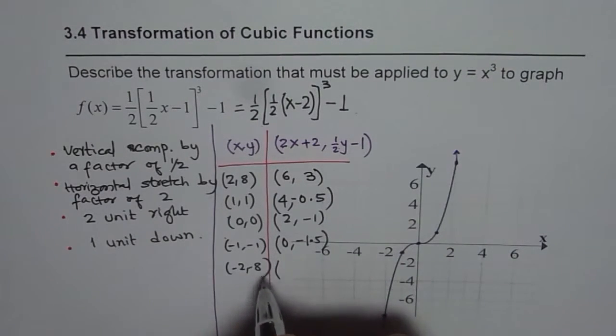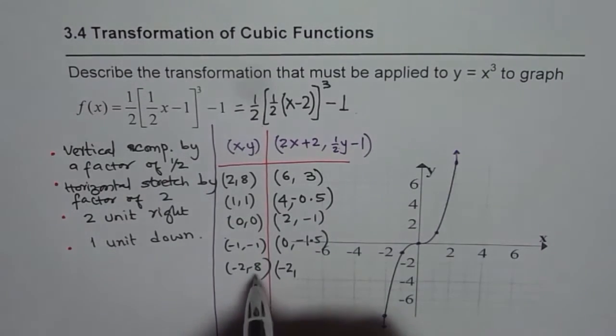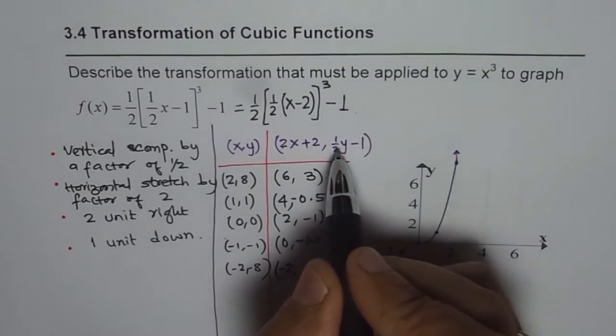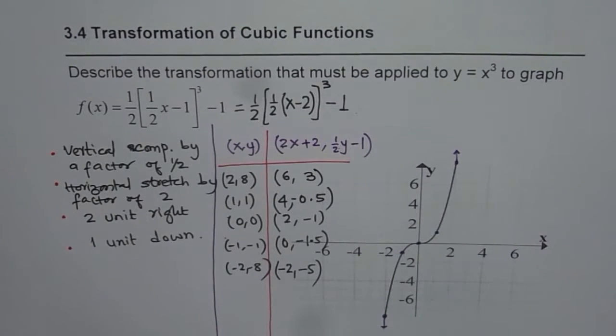And then we have minus 2 times 2 is minus 4, so it will be minus 2. Minus 8 half is minus 4, that means minus 5. So these are the transform points.